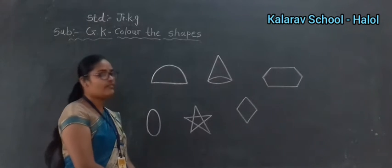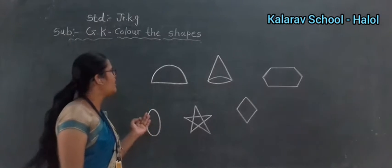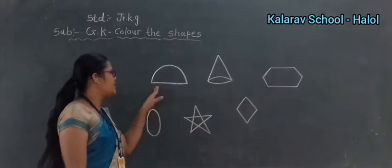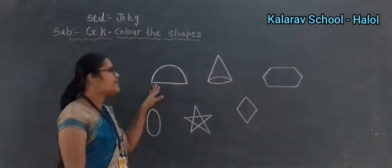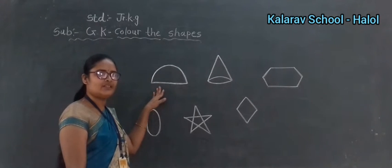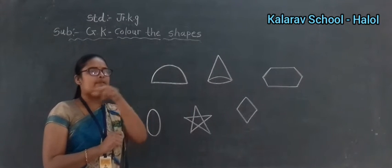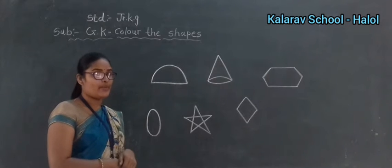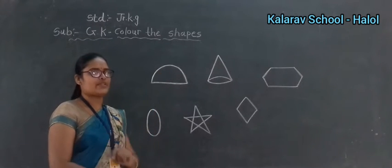So first we are doing the oval. So all students look here — there are many shapes here. This is a semi-circle. Speak with me: semi-circle. When you open an umbrella, that is how a semi-circle looks. And a rainbow — a rainbow is also a semi-circle shape.